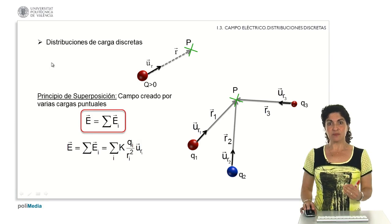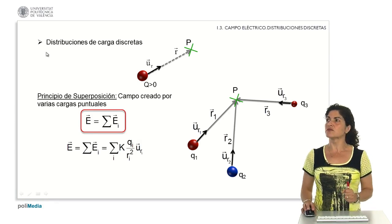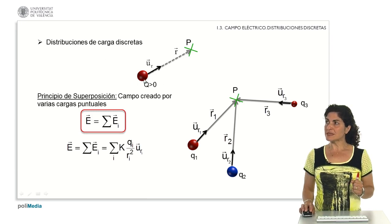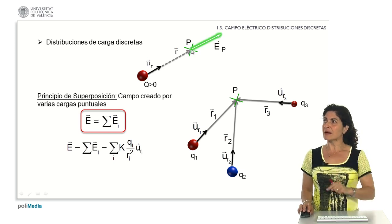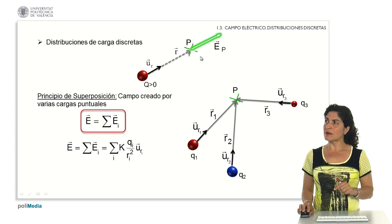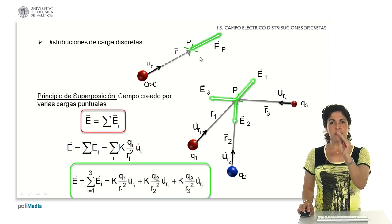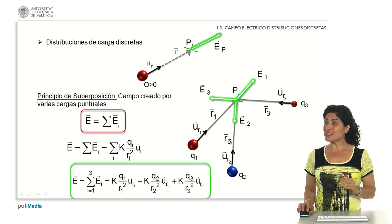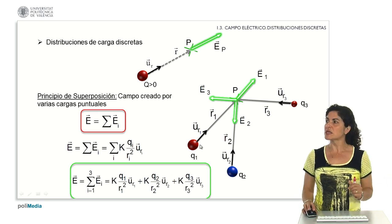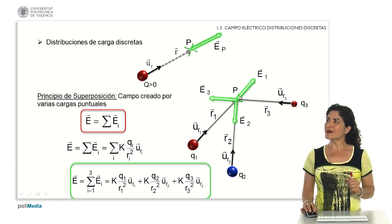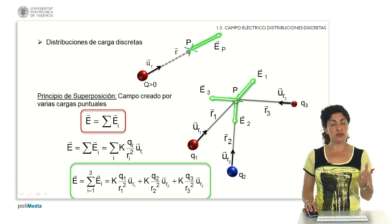For the algebraic expressions to calculate electric fields, the expression for a single charged particle is the one seen before: the charge times the constant K divided by the distance squared. When we have a distribution of multiple charges in space — for example, three charges as shown here, but any discrete finite system applies — with a positive charge q₁, negative q₂, and positive q₃, the field generated at a given point P is calculated by applying the principle of superposition, as used when studying electric forces.